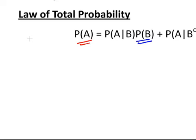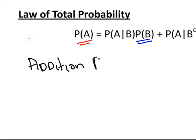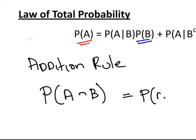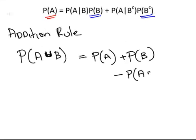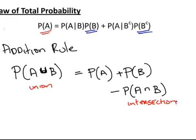One rule I should also mention is the addition rule. The probability of A union B is equal to the probability of A plus the probability of B minus the probability of A intersection B. This union here and this is intersection. That is the addition rule, and it's quite an important one that we will use.